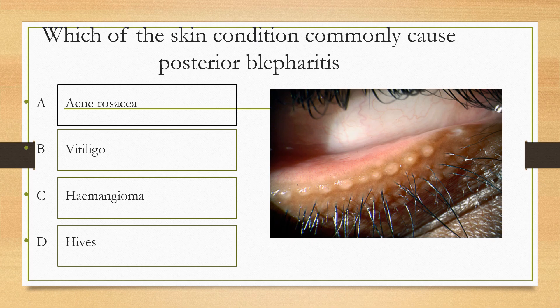Next question. Which condition commonly causes posterior blepharitis? Option A acne rosacea, option B vitiligo, option C hemangioma, option D hives. The answer is acne rosacea, which can commonly cause posterior blepharitis.